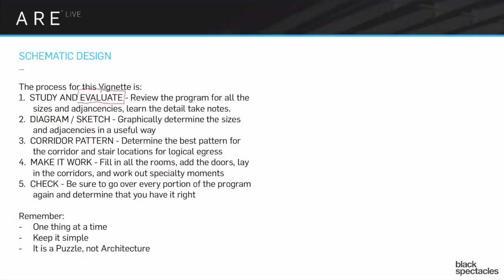After you've gone through all that information and gotten it into a useful form, then you're going to start diagramming and sketching. You'll move through the process and make quick first assumptions about how the design is likely to go, using those sketches to guide your next set of steps. Then — and this is a little counterintuitive — you're going to start figuring out what your corridor pattern is, your egress pattern. You're not going straight to figuring out where all the rooms are; you're thinking about the backbone that holds it all together.